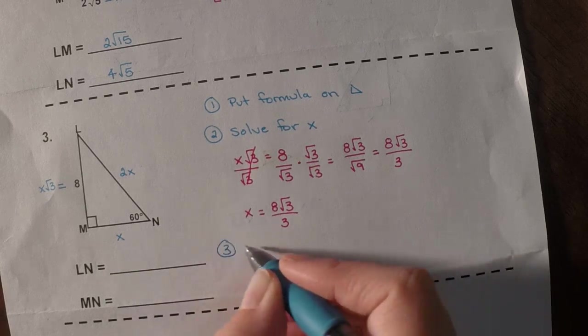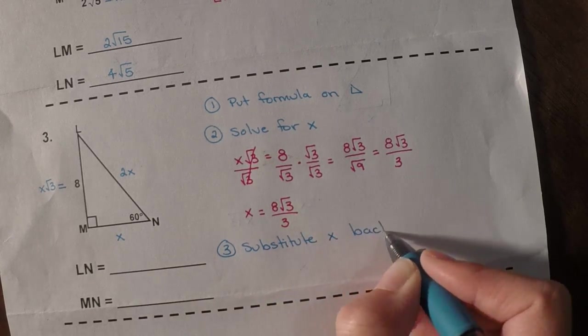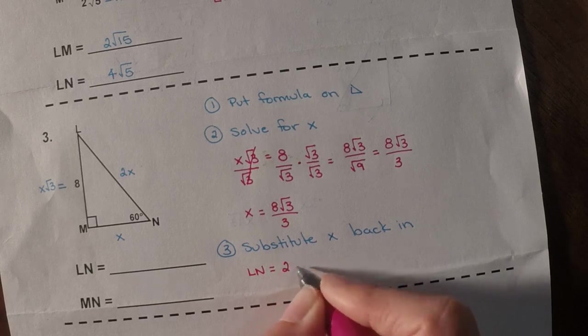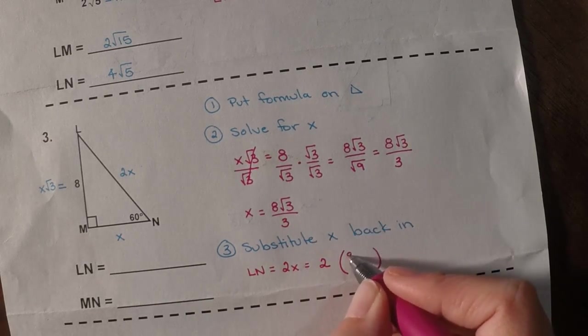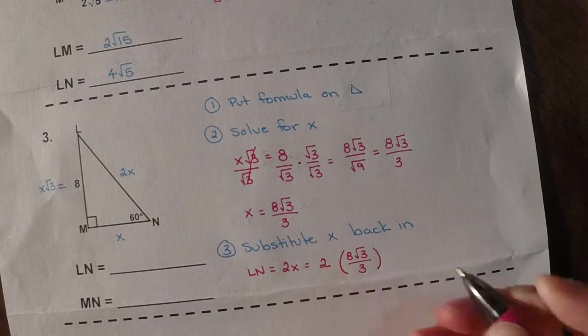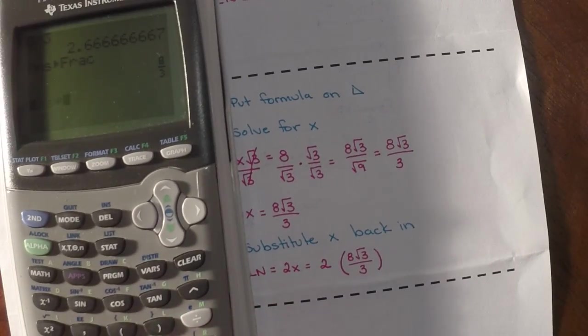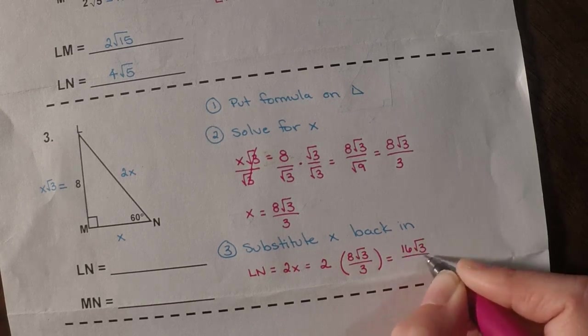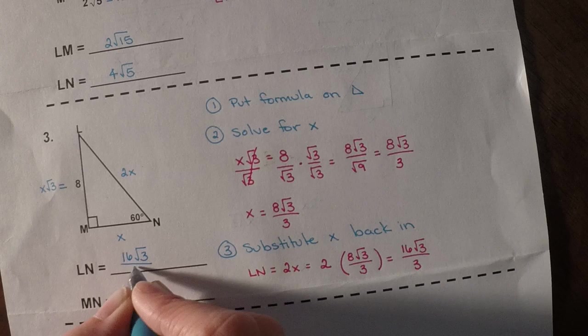So then, step 3 is to substitute x back in. So the first thing they ask me for is LN. Remember, LN is 2x. So that means I have to multiply 2 by whatever x is. Well, x is 8 root 3 over 3. So now, if I go back to my calculator, I still have that 8 thirds in there. I want to multiply that times 2. So it is 16 thirds. So all I do is change this to 16 root 3 over 3. So LN is 16 root 3 over 3.